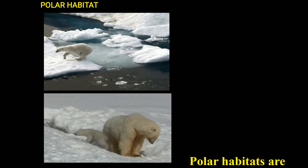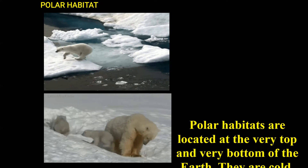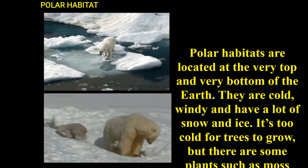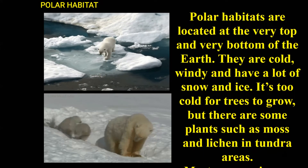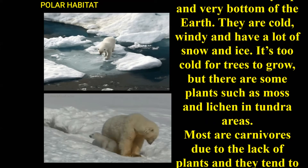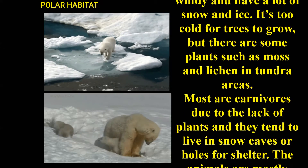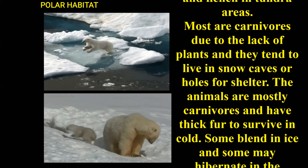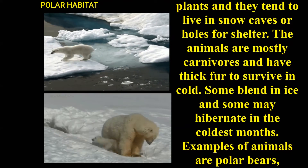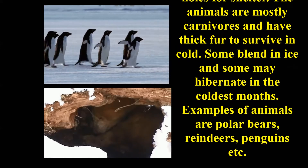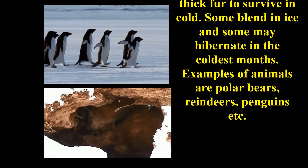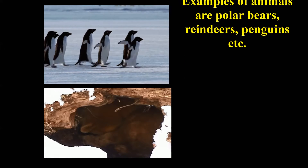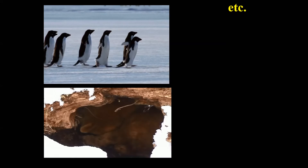Polar habitats are located at the very top and very bottom of the earth. They are cold, windy, and have a lot of snow and ice — too cold for most trees, though some plants such as moss and lichen are found in tundra areas. Most animals are carnivorous due to the lack of plants and tend to live in snow caves or holes for shelter. They have thick fur to survive the cold, and some may hibernate in the coldest months. Examples include polar bears and penguins.